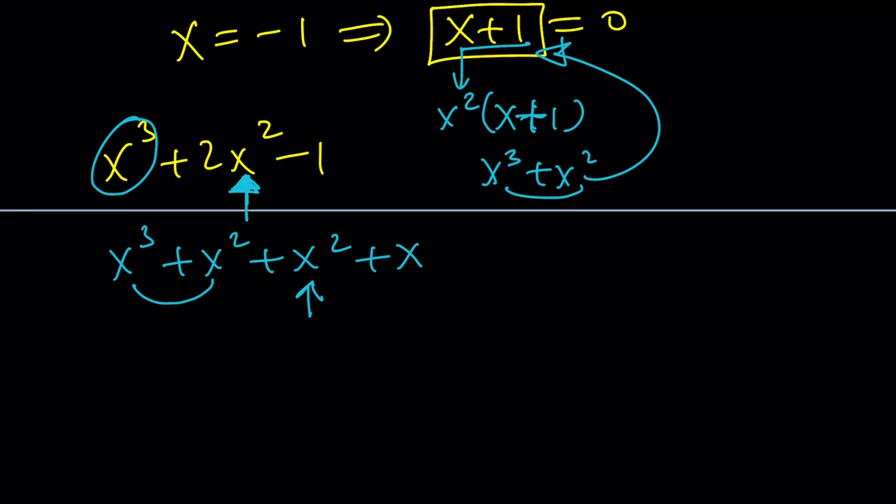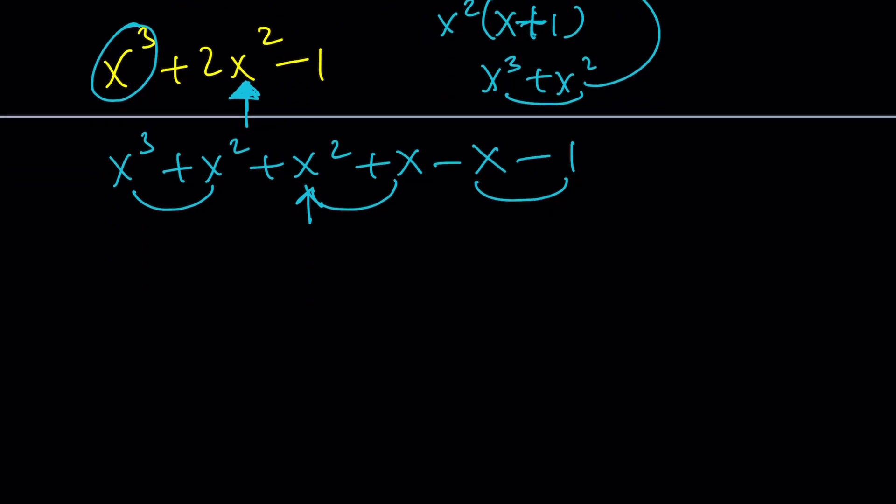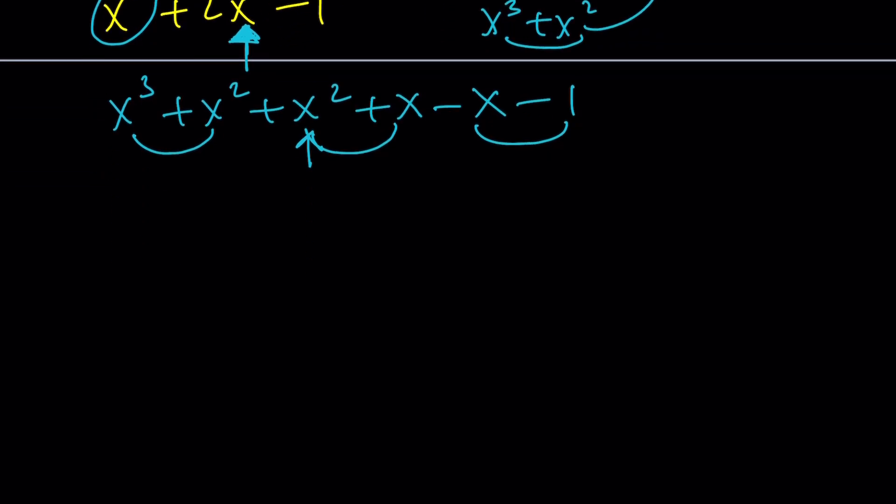And then, of course, I don't have an x here, so I have to subtract it. And then at the end, I have a negative 1. You see, I have to put everything so that my expression isn't changed. Now, this is what I have. And guess what? This is factorable by grouping. It's x squared times x plus 1 plus x times x plus 1 and then minus 1 times x plus 1. And that is equal to 0.